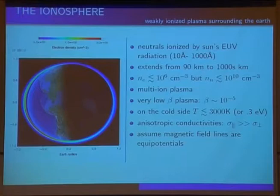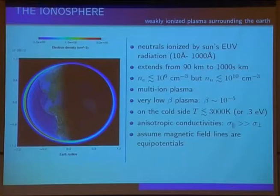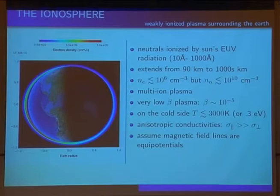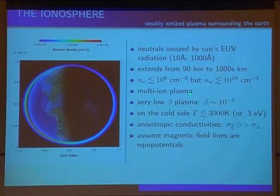So the ionosphere, the weakly ionized gas surrounding the Earth. The sun here is to the left. We have sunrise. We build up the ionosphere from photoionization. It intensifies in the afternoon, and then after sunset, it decays away at night, but never really goes away completely. It's a multi-ion plasma, and it's a very low beta plasma, 10 to the minus 4, 10 to the minus 5.